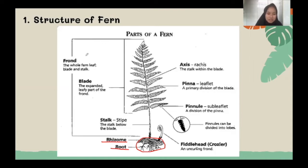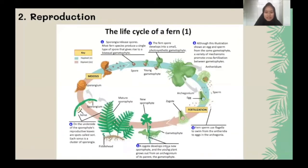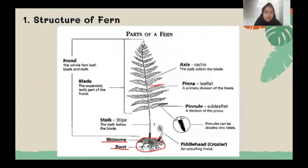Next is the stem. Fern has a stem and a leaf. In the gametophyte phase, the stem is a prothallium. Prothallium is like a sheet of paper. The function of prothallium is to carry out photosynthesis. In the sporophyte phase, the stem becomes a true stem and has vascular tissue like xylem and phloem. The leaf exists only in the sporophyte phase.